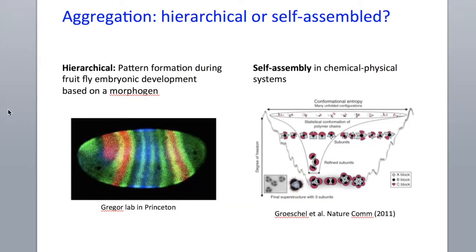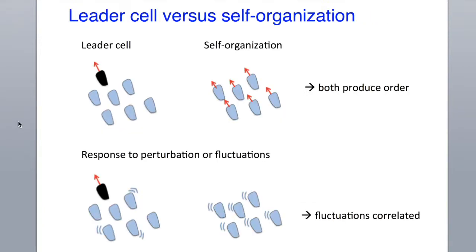There are two main ways to achieve aggregation. It could be hierarchical, as done in an embryo — for instance, if there are external maternal factors which tell the embryo how to polarize, how to form the head and tail, and how to form the body parts. Or it could be self-assembled if the small molecules or constituent cells have local properties which tell them how to order themselves. Or in terms of cells, there could be a leader cell telling other cells what to do, or it could be self-organized if the cells communicate with their neighbors. In both cases, we produce order.